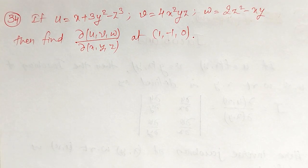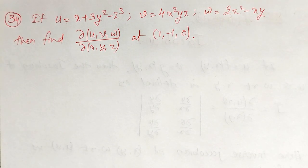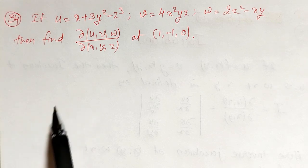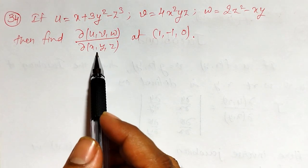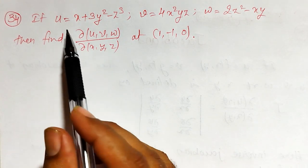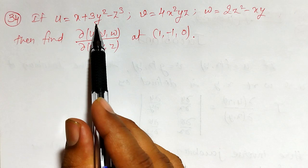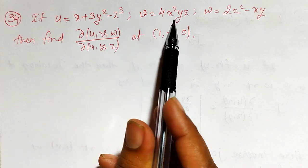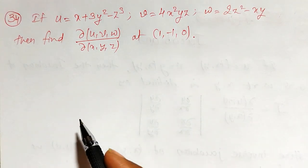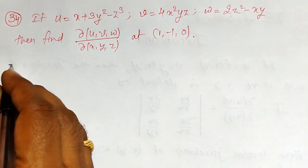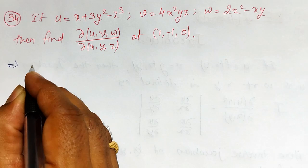Welcome friends. In this video I'm going to evaluate the Jacobian of u, v, w with respect to x, y, z, where u, v, and w are defined as given.